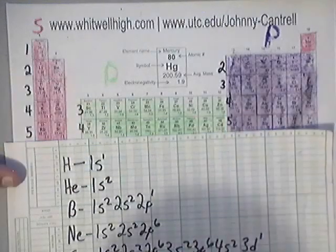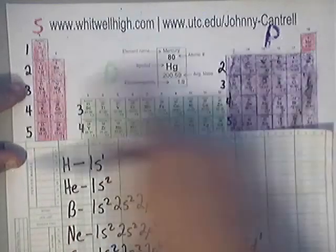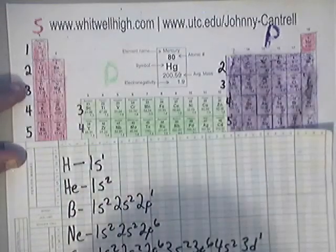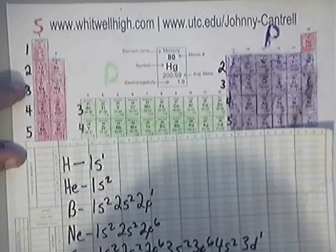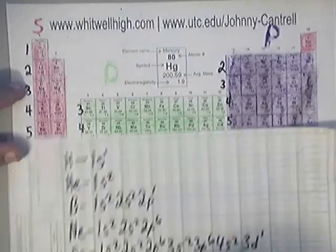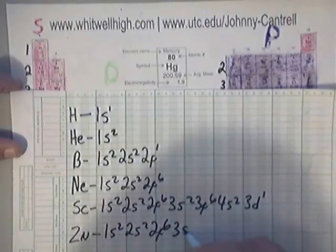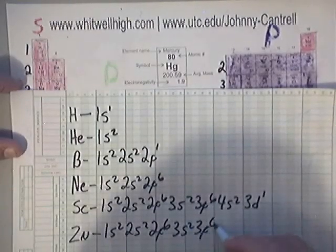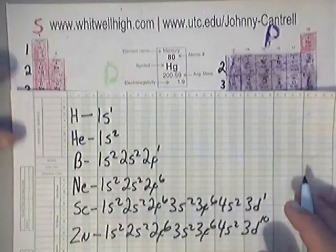The last example is zinc (Zn). Zinc includes basically everything written for scandium plus more. The full configuration is 1s², 2s², 2p⁶, 3s², 3p⁶, 4s², and finally 3d¹⁰.